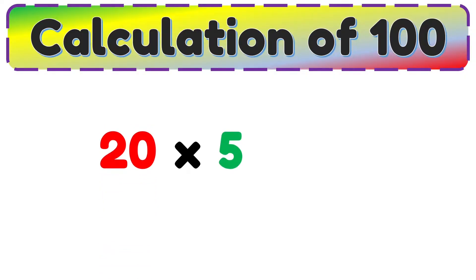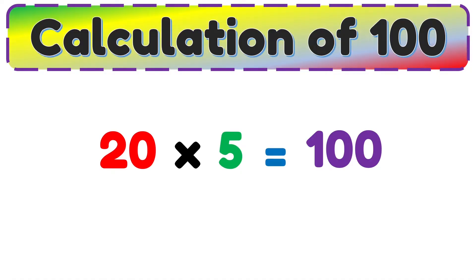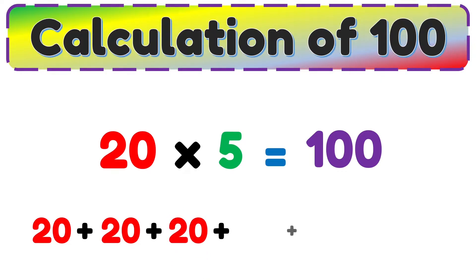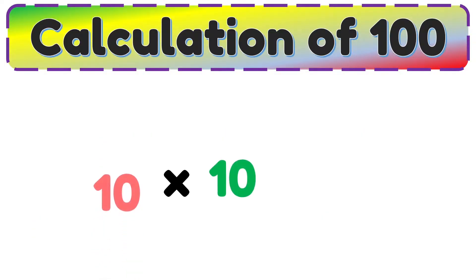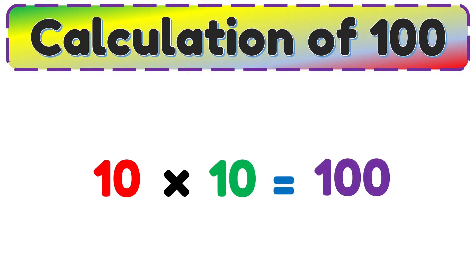20 multiplied by 5 is equal to 100. 5 times 20 is equal to 100. 10 multiplied by 10 is equal to 100.